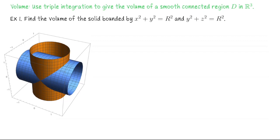Let's see an example of using a triple integral to compute the volume of a region in R3. We'll find the volume of the solid enclosed by the two cylinders x²+y²=R² and y²+z²=R². The first cylinder has radius R with central axis along the z-axis; the other cylinder lies on its side with central axis along the x-axis. To set up the bounds of integration, let's switch to a MATLAB demonstration to explore this region in more detail.